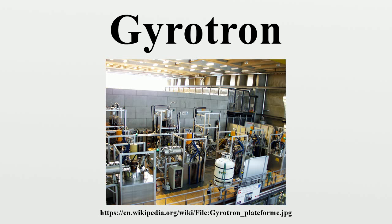In the gyrotron, a hot filament in an electron gun at one end of the tube emits an annular-shaped beam of electrons, which is accelerated by a high-voltage anode and then travels through a large tubular resonant cavity structure in a strong axial magnetic field, usually created by a superconducting magnet around the tube.